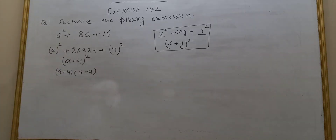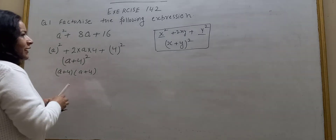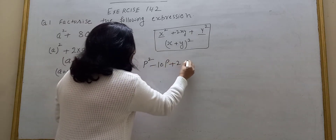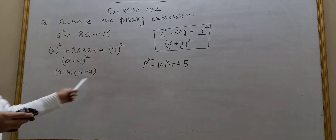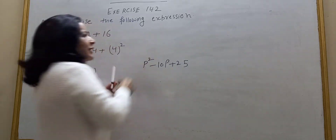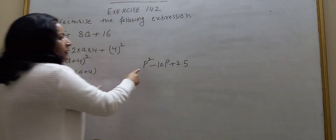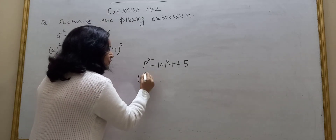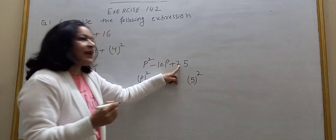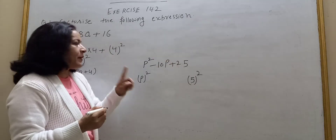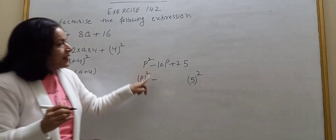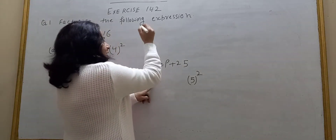Second question is P squared minus 10P plus 25. What is the difference in this expression? 25 is a square of 5 — perfect square. P squared is also a perfect square. Now the middle term has a minus sign.